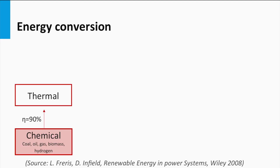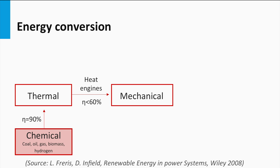By burning fossil fuels, roughly 90 percent of the chemical energy is converted into heat. Using heat engines, thermal energy can be converted into mechanical energy. Heat engines have a conversion efficiency of up to 60 percent. The far majority of current cars and trucks are based on this principle.